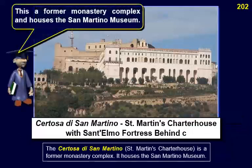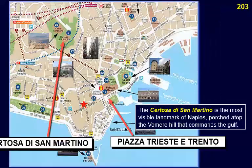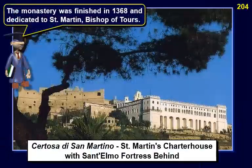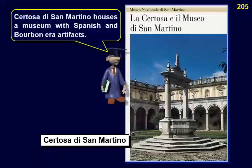The Certosa di San Martino — Saint Martin's Charterhouse — is a former monastery complex housing the San Martino Museum. It is the most visible landmark of Naples, perched atop the Vomero hill that commands the gulf. As a Carthusian monastery, Certosa di San Martino was finished in 1368 and was dedicated to Saint Martin, Bishop of Tours. Today it houses a museum with a display of Spanish and Bourbon-era artifacts.